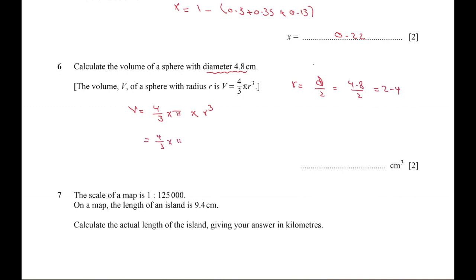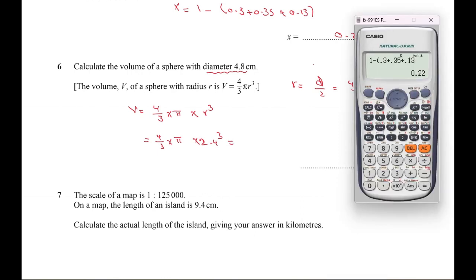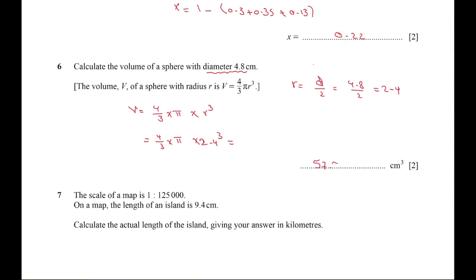Using a calculator: 4/3 times pi times 2.4 to the power of 3. The answer is 57.9 cubic centimeters. Thank you.